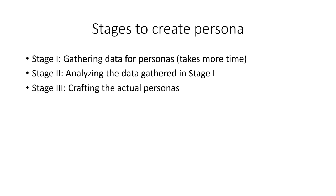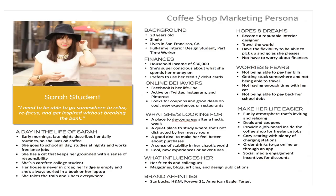Let us see the stages for creating a persona. In the first stage, we gather data for the persona, which takes a lot of time and effort. The second stage is analyzing the gathered data to create a more specific and precise persona and to remove any ambiguity. The third stage is to refine the characteristics to fit the system or product and finalize the actual persona. There is an example of a specific persona for a coffee shop marketing campaign — a student named Sarah, who is 20 years old and works as an interior design student. She is looking for a place where she can relax, study and feel better, so she might go to a coffee shop for a new experience.